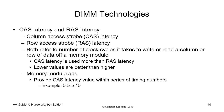CAS (Column Address Strobe) latency and RAS latency: a RAM module's CAS latency is how many clock cycles it takes for the RAM module to access a specific set of data in one of its columns, and make that data available on its output pins from when a memory controller tells it to. When buying RAM, you'll see timing listings such as CL16-18-18-38 or CL14-14-14-34. The number after CL represents the RAM kit's CAS latency.